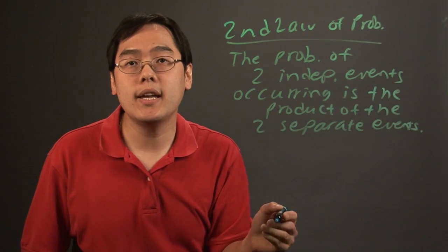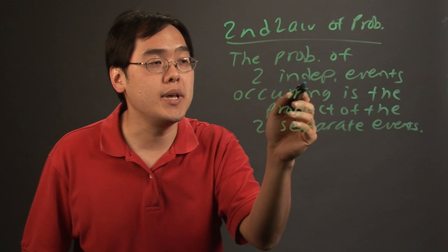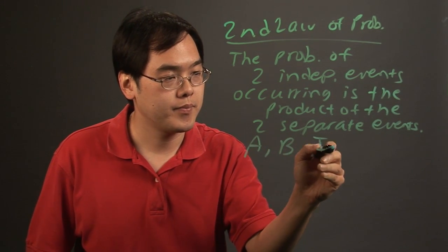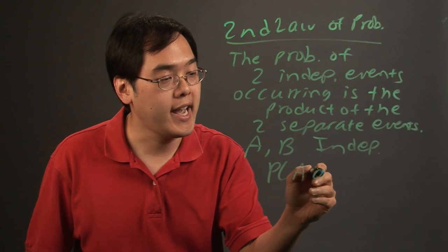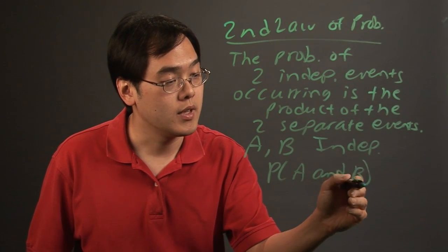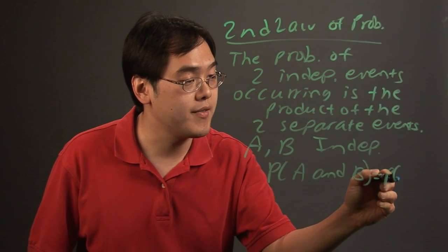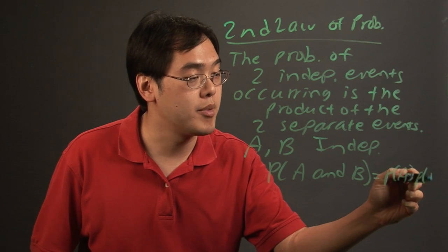So the idea here is assuming that A and B are independent, the probability of A and B happening is going to equal to the probability of A times the probability of B.